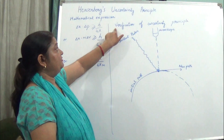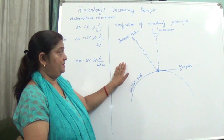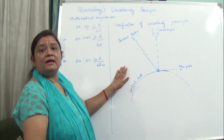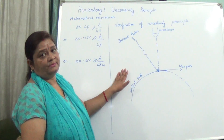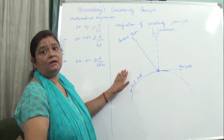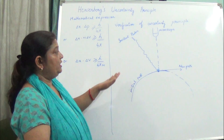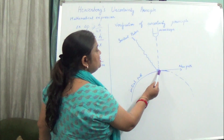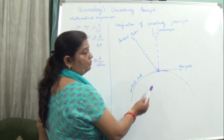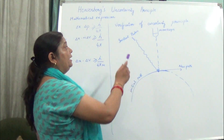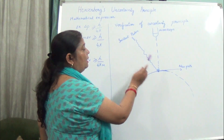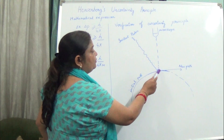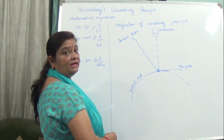Let us see the verification of the uncertainty principle — how can it be verified that position and velocity cannot be determined simultaneously at a particular time with absolute certainty. Here you can see this is a microscopic body. In order to see the position of this microscopic body, it is necessary to incident a photon of small wavelength. Only then can the position of this microscopic body be seen.